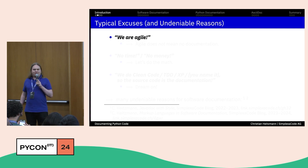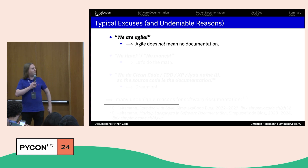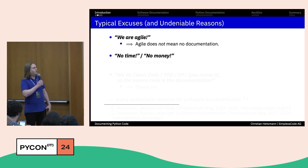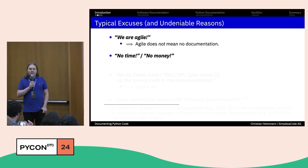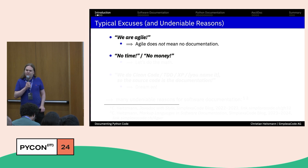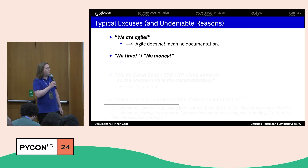What are the typical excuses? Excuse number one: 'we are agile, that's why we do not document.' Agile does not mean not having to do any documentation — this is just plain wrong. Then, if the economy is going up, the company has no time to do documentation; if business is going down, it has no money. In other words, they never have and never want to do documentation.